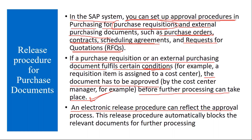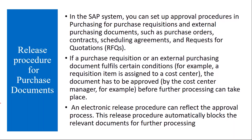An electronic release procedure can reflect the approval process. In the system, you can set up a release procedure which ultimately fulfills the approval process. This release procedure automatically blocks the relevant documents for further processing — unless and until it is released, you cannot continue further. So this release procedure is nothing but the approval process: before purchasing material from a vendor, you take approval from the respective people like the purchasing department manager, vice president, or company MD.